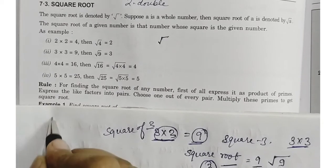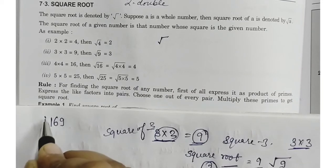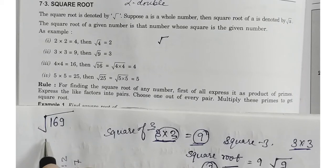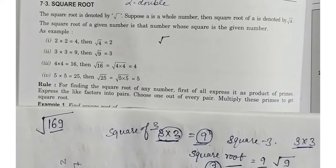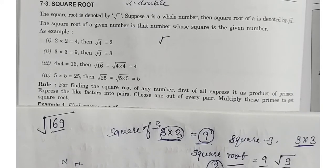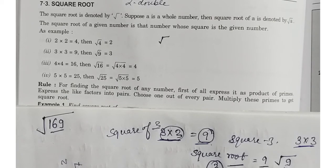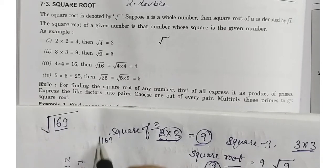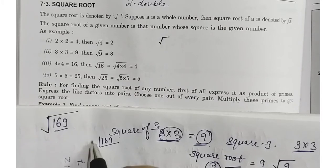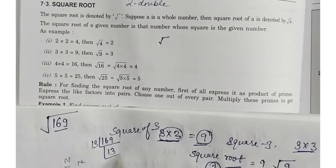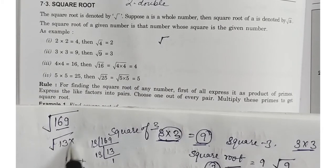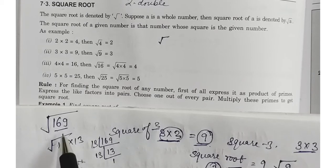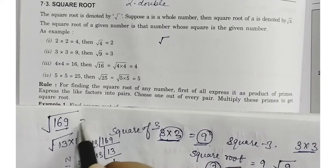Suppose we have 169. تو بولا جائے گا کہ اس کا square root کیا ہوگا. یہاں complicated ہوگی — یہاں تو 9 تھا تو ہمارے لئے easy تھا کہ ہم نے اس کو 3 multiply 3 میں break کر دیا. لیکن جب ہمارے پاس تھوڑا سا complicated number ہوتا ہے تب ہم 169 کا factor نکالیں گے. تو آپ دیکھیں گے یہ 13 سے کٹے گا — 13 آئے گا، پھر 13 سے کٹے گا تو 1 آئے گا. یعنی ہمیں factor ملا 13 multiply 13. تو 169 کا square root ہوگا 13.